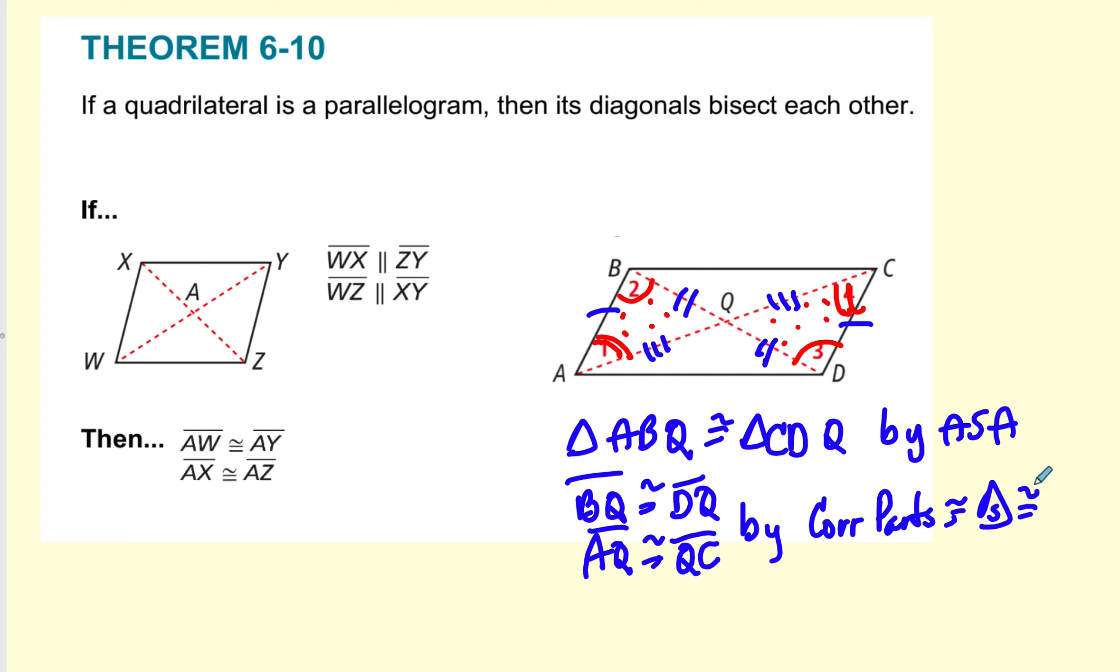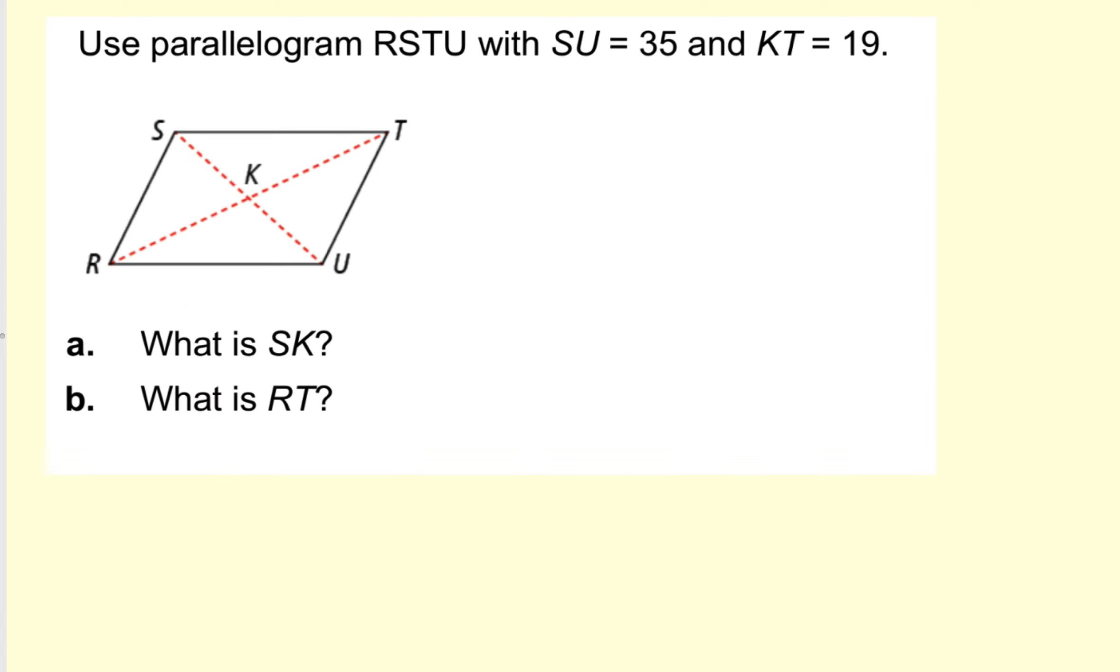And so that's why those triangles are congruent. I don't think I used the same letters in the proof, but that's how we do it with the letters that I have there. All right. So now we know that when you have a parallelogram, this is congruent to this, and this is congruent to this. And this will help us find these answers.